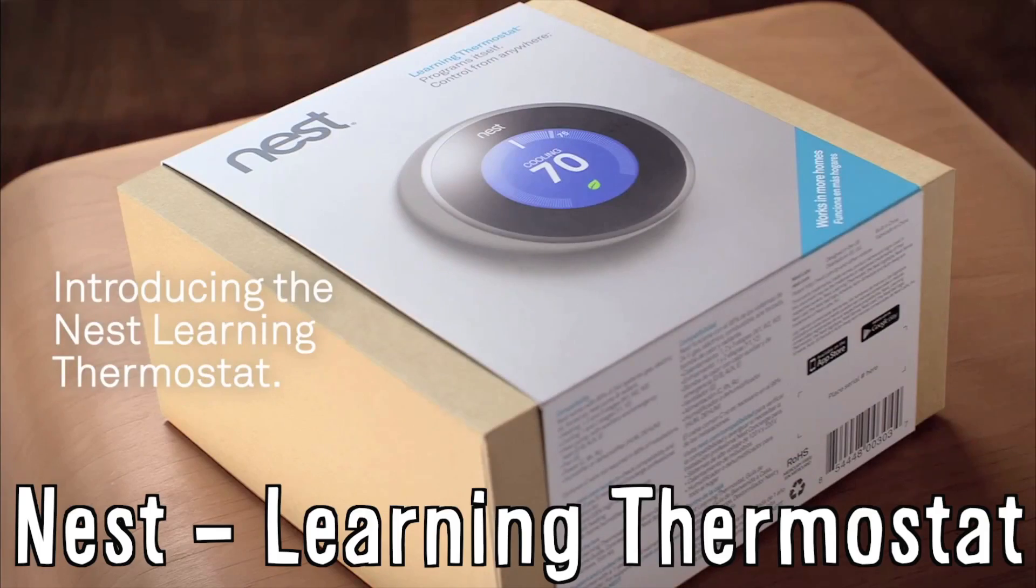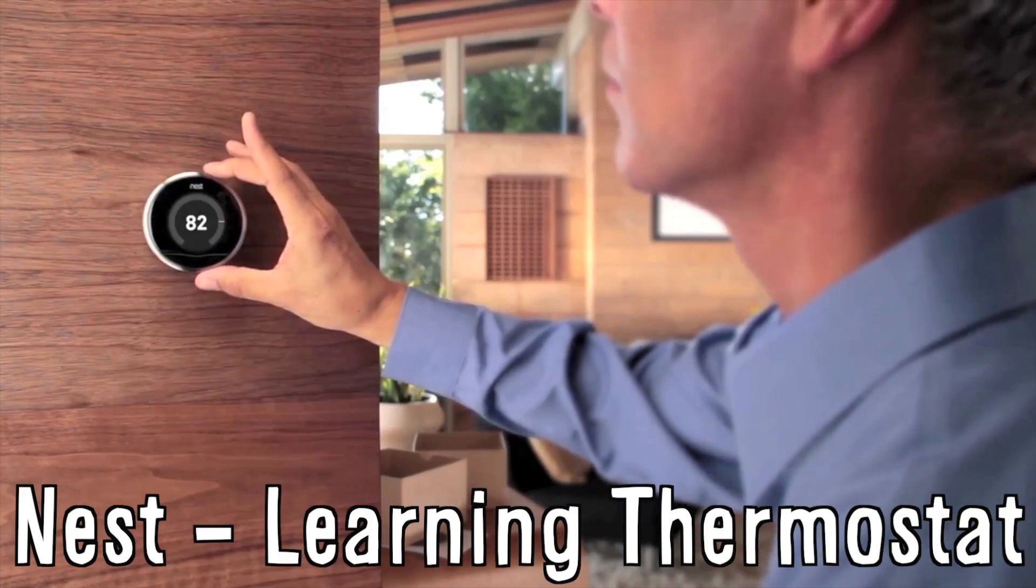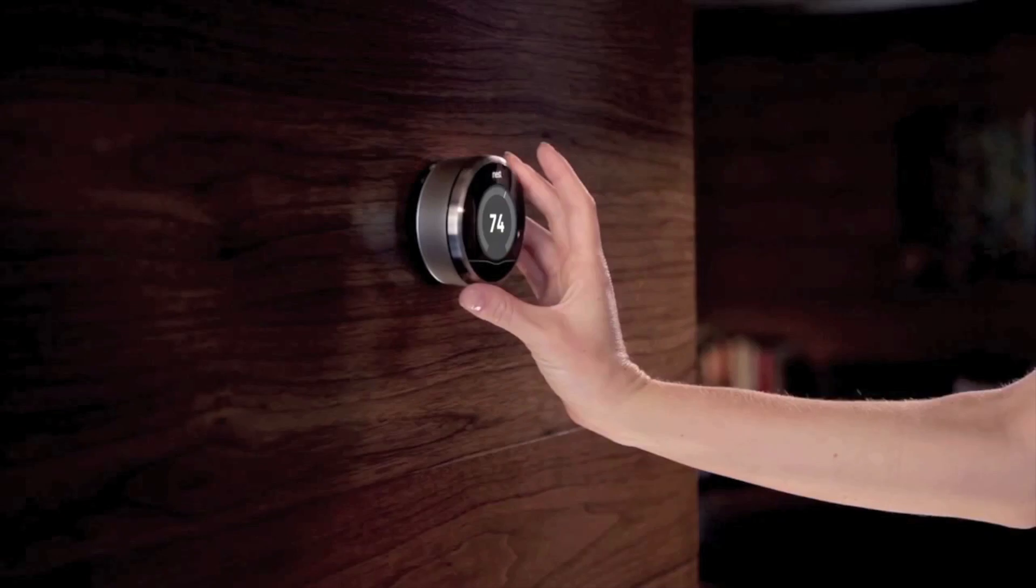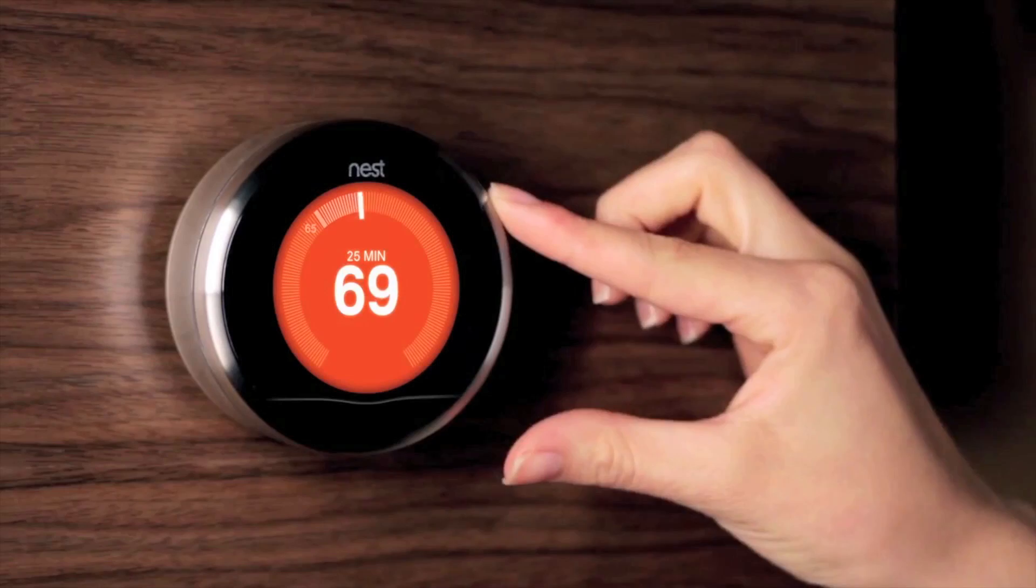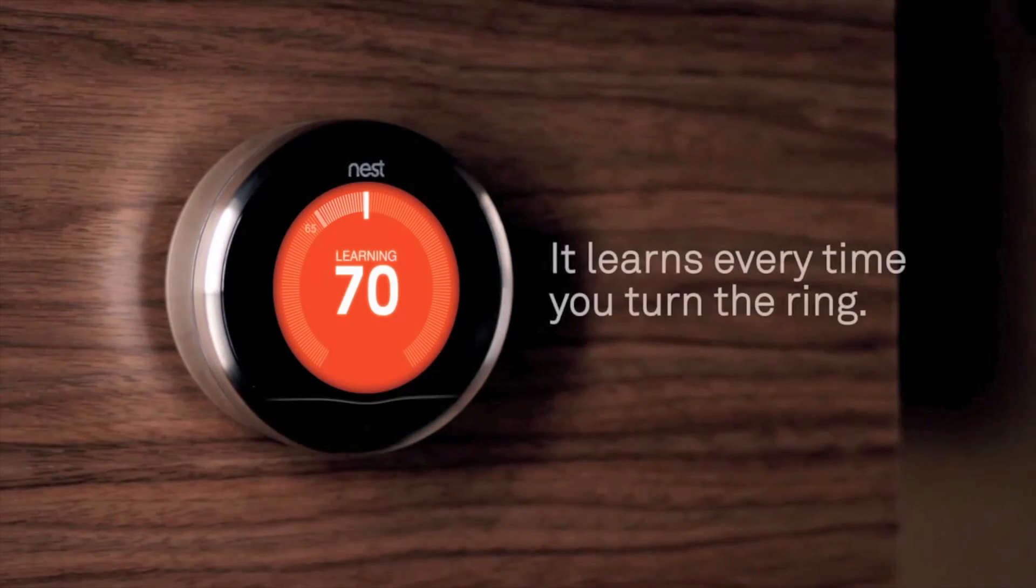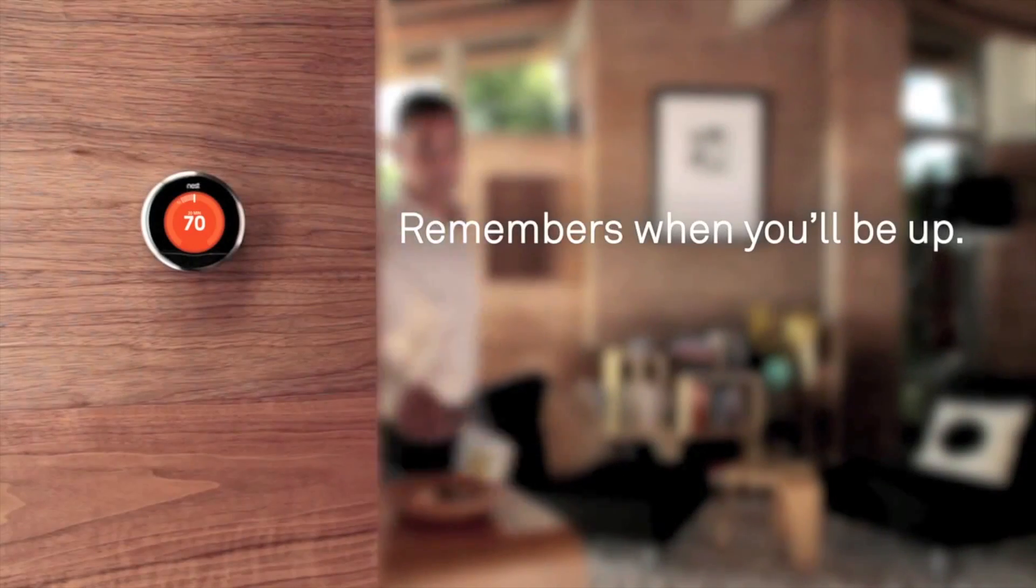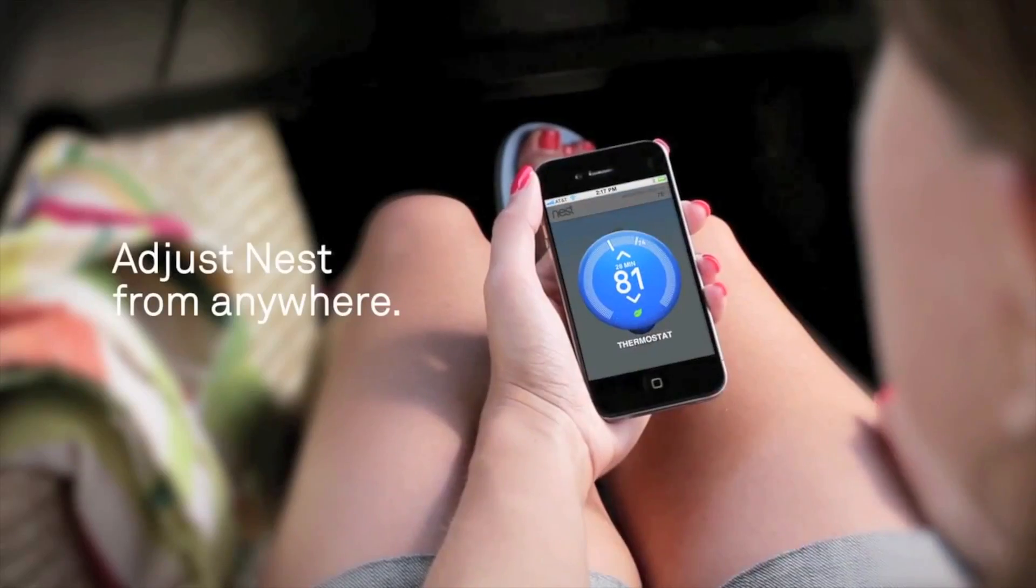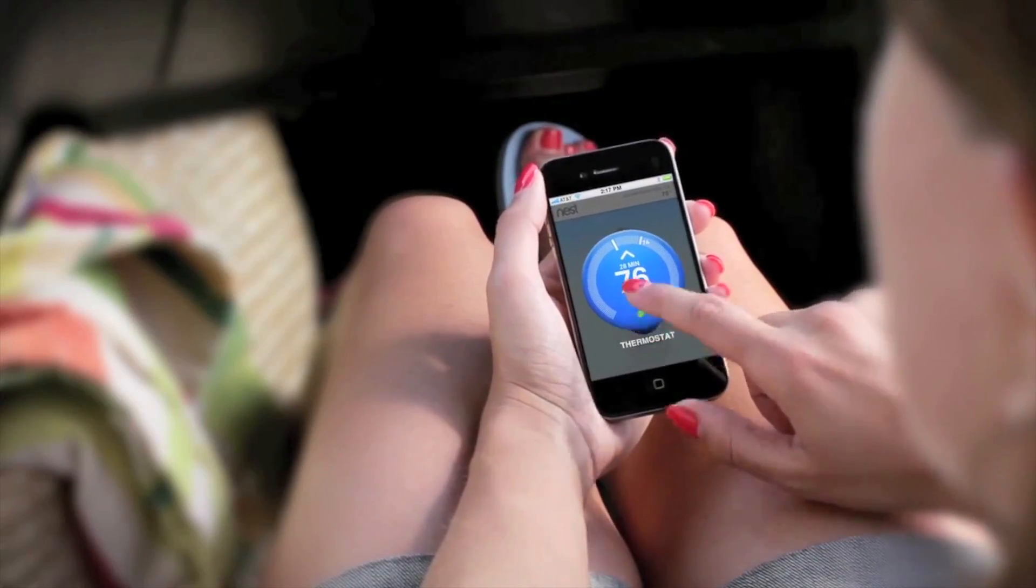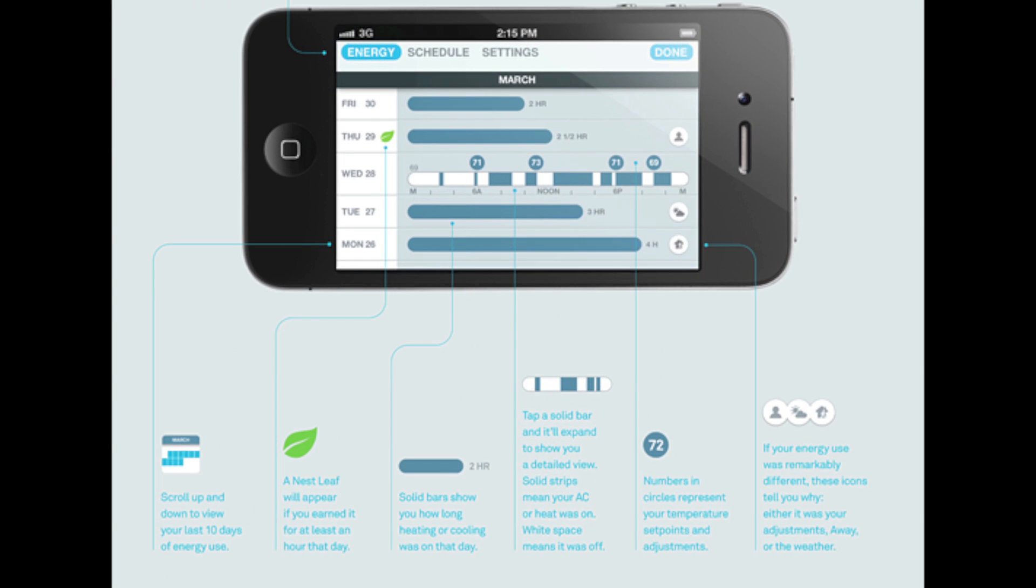Nest is a learning thermostat designed to save energy and money. It learns your schedule and helps optimize the temperature of your home all while programming itself. A small leaf appears to indicate energy saving and simply changing one degree can cut energy use up to 5%. It's adjustable while you're away with a smartphone and gives you a breakdown of how and when you're using the most energy.